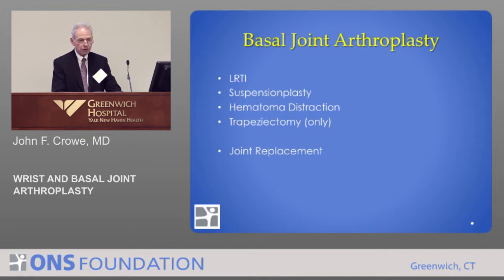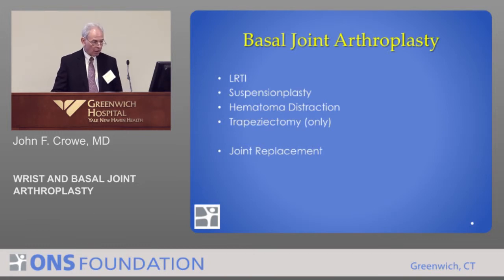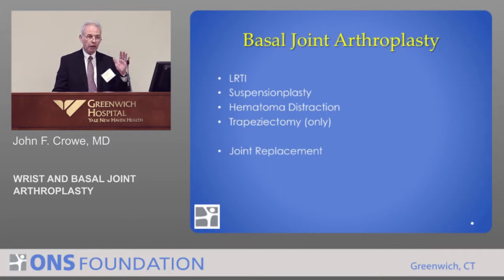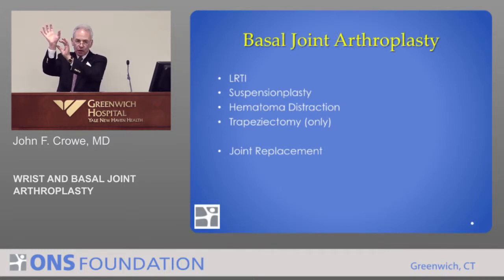Basal joint arthroplasty — there are basically two things that 98-99% of orthopedic surgeons do. The first four options on this list are essentially the same operation with slight variations, and the last is a joint replacement using artificial material. The simple procedure is a trapeziectomy — the trapezium bone is removed and the capsule is closed — which has given actually good results, better than anticipated. All the other procedures provide support so the thumb metacarpal doesn't collapse, shorten, or shift out of place.